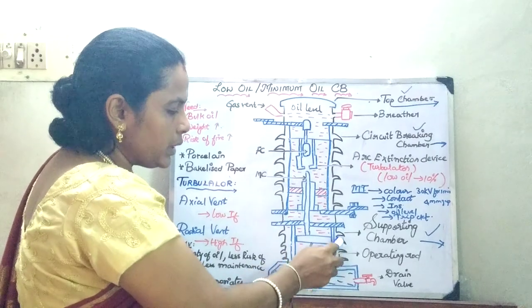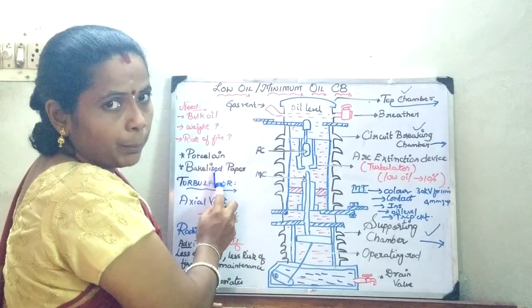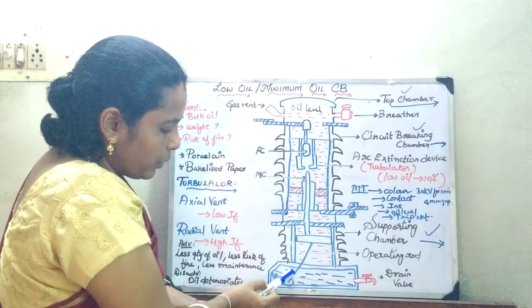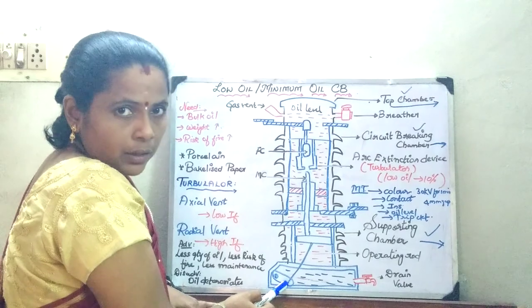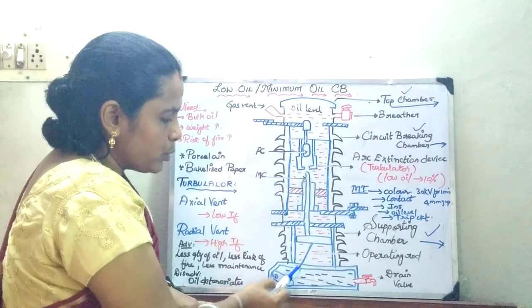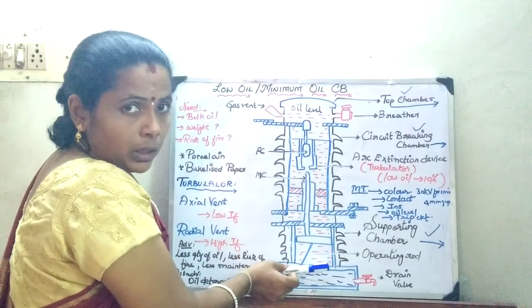The insulation is going to be provided by means of the porcelain and the pecalized paper. So this moving contact is going to be fixed through a fixed rod or a piston cylinder arrangement to the next chamber. This is also going to be filled with oil.